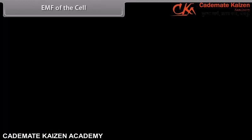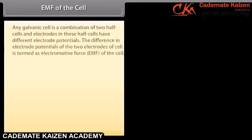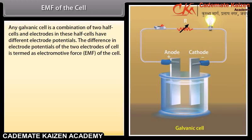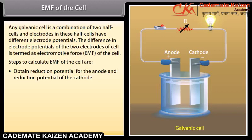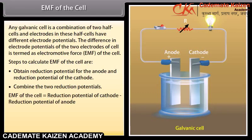Representation of an electrochemical cell: A galvanic cell is represented as follows. The salt bridge is represented by two vertical lines. A single vertical line represents the phase boundary between the electrode and electrolyte. Anode is written on the left-hand side of the salt bridge as the symbol of the metal followed by the symbol of the ion with which it is in equilibrium. Cathode is written on the right-hand side, with the symbol of the ion first, followed by the symbol of the metal.